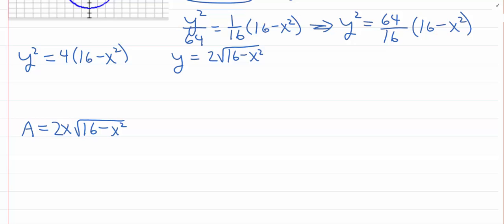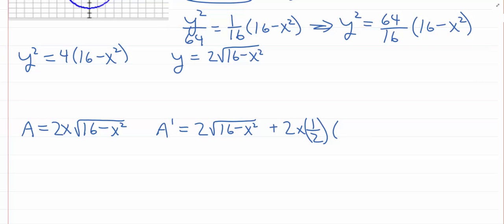I'm going to take the derivative of the first times the second. Remember, it's a product. So I've got to say plus the derivative of the second times the first — let me write the 2X in there. The derivative of the second is going to be one-half times 16 minus X squared to the negative one-half, times negative 2X. And of course we get some cancellation going on here.